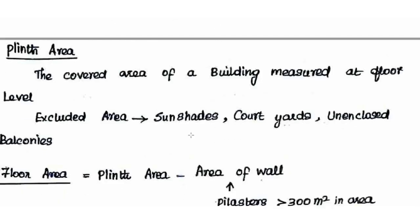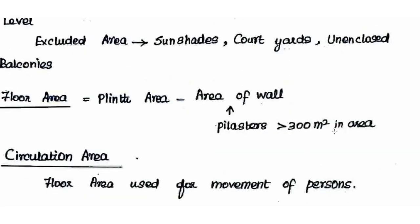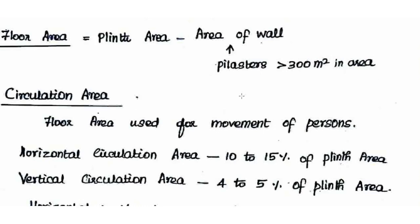The covered area of your building measured at floor level is the built-up area. Floor area is calculated by subtracting the wall area from the built-up area. Plinth area is the covered area at floor level; when wall thickness is greater than 300 mm, wall area is included.